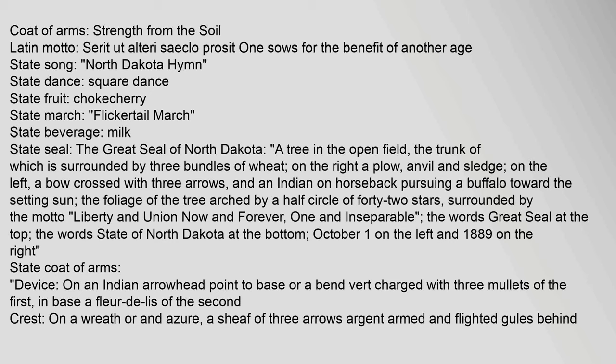The great seal of North Dakota — a tree in the open field, the trunk of which is surrounded by three bundles of wheat; on the right, a plow, anvil and sledge; on the left, a bow crossed with three arrows and an Indian on horseback pursuing a buffalo toward the setting sun. The foliage of the tree arched by a half circle of forty-two stars, surrounded by the motto: Liberty and Union, now and forever, one and inseparable. The words 'Great Seal' at the top, 'State of North Dakota' at the bottom, October 1st on the left and 1889 on the right.